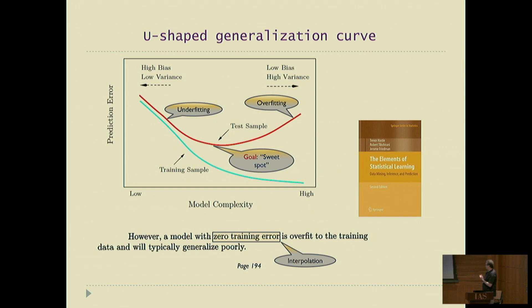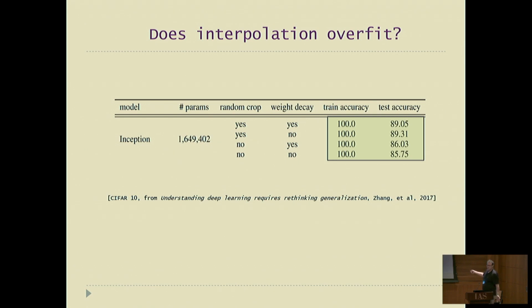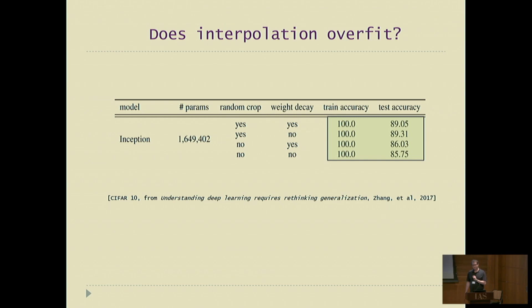An important result came from Zhang et al. 2017, who pointed out that you can actually interpolate and yet get good accuracy. A neural network trained on CIFAR-10 with 100% training accuracy still has pretty good test accuracy — you don't see large overfitting. This is already troubling because it contradicts the informal corollaries I had before. I will now give some evidence that this type of effect actually contradicts the bounds themselves.